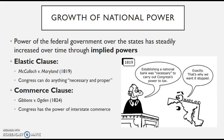Another important case is Gibbons v. Ogden in 1824, which establishes the Commerce Clause, allowing Congress to have the power over interstate commerce. Anything that crosses state lines Congress can now regulate — that's why Congress can regulate airwaves and airplanes, as they cross state boundaries. These two cases within five years of each other significantly expand what Congress can control in terms of commerce and what is necessary and proper.